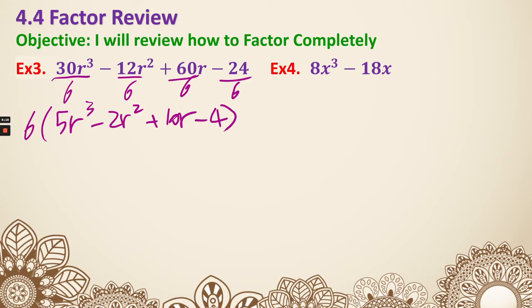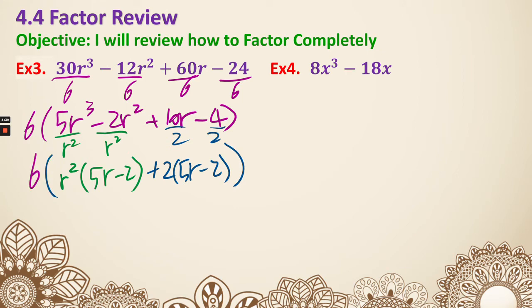After that, we can do our factor by grouping. So these two, they actually share r squared. We're going to have r squared times 5r minus 2. Next, these two, they actually share 2, so we're going to do plus 2 times 5r minus 2 as well. Don't forget we have the 6 in the front. Now they have the same thing inside the parentheses. Let's factor that out. We have r squared plus 2, and 5r minus 2 left right there. Now we're done with example 3.